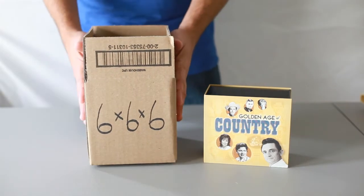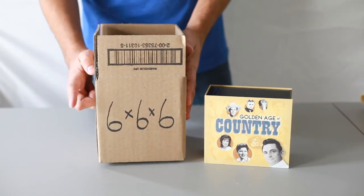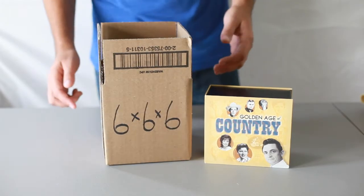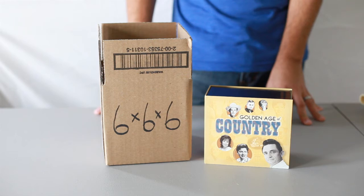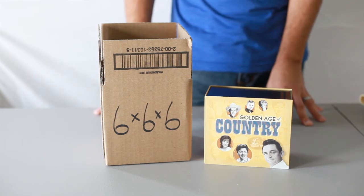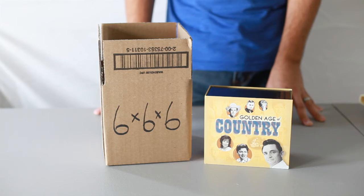We're going to start with what boxes you can use. As you can see here, this is a 6x6x6. You can also use a 7x7x6. You can get these at Walmart, Home Depot, Lowe's, the UPS store, or your local post office.